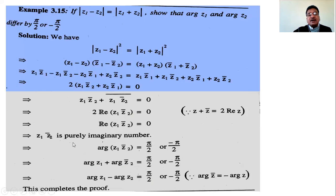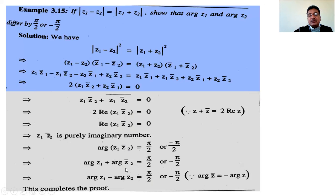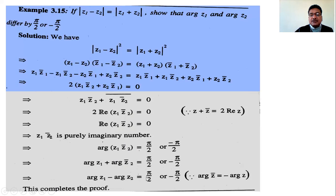Since z1·z̄2 is purely imaginary, its argument is π/2 or -π/2. Using the property arg(z1·z2) = arg(z1) + arg(z2) and arg(z̄2) = -arg(z2): arg(z1·z̄2) = arg(z1) + arg(z̄2) = arg(z1) - arg(z2) = ±π/2. Therefore the arguments of z1 and z2 differ by π/2 or -π/2.